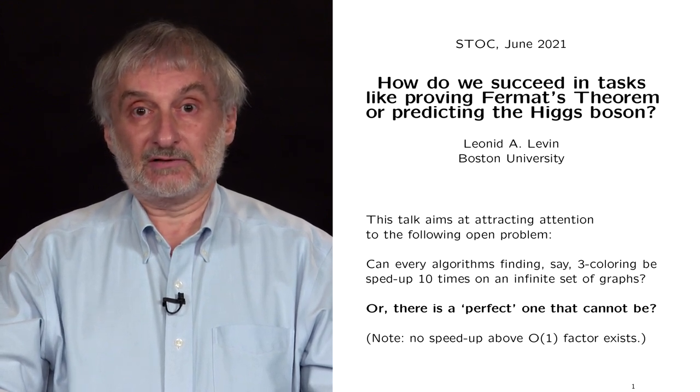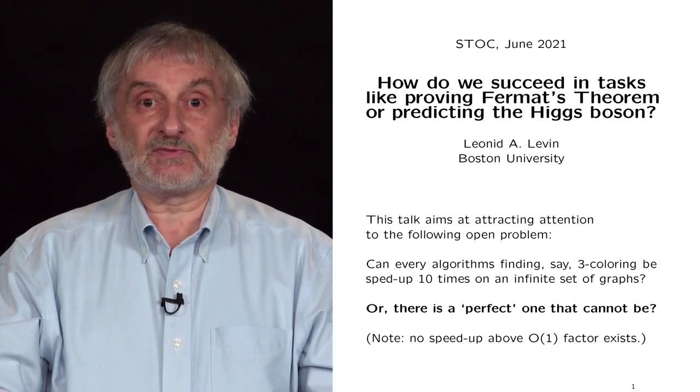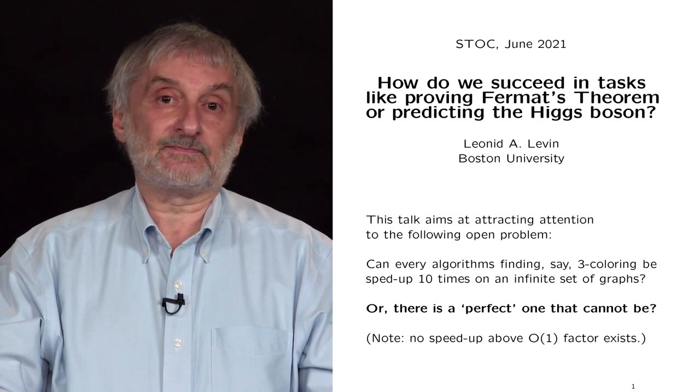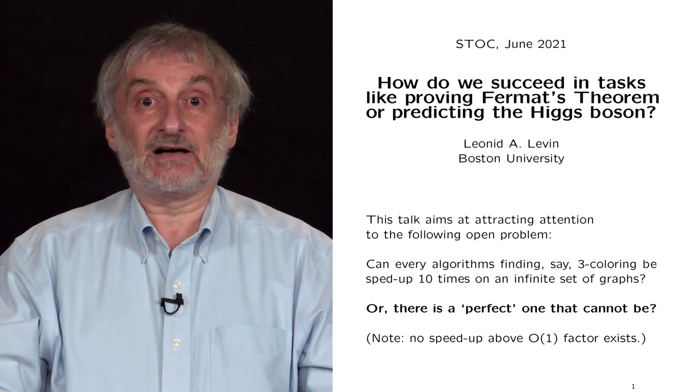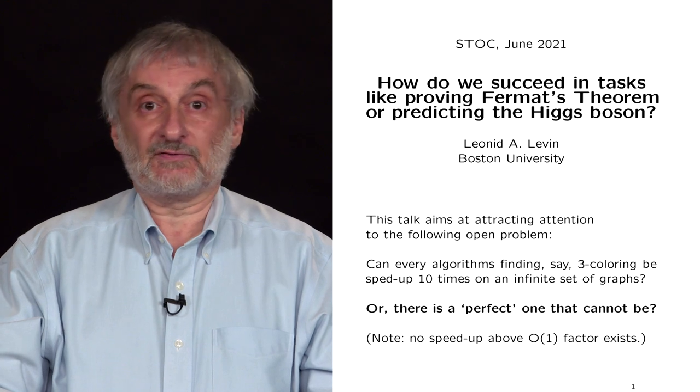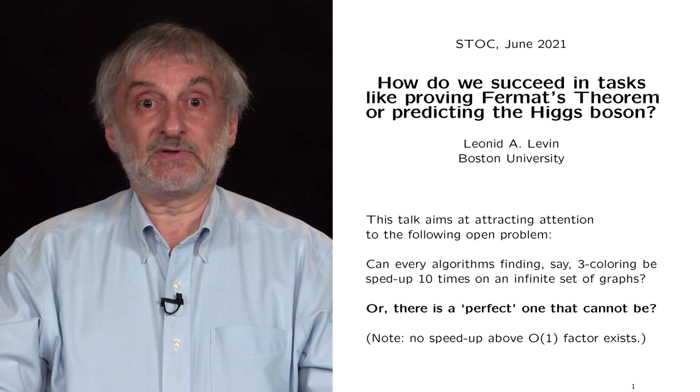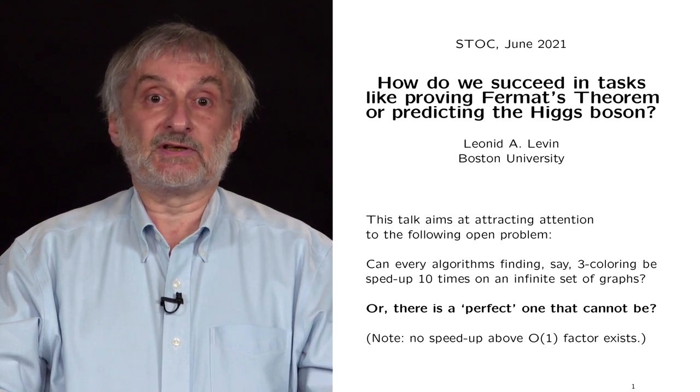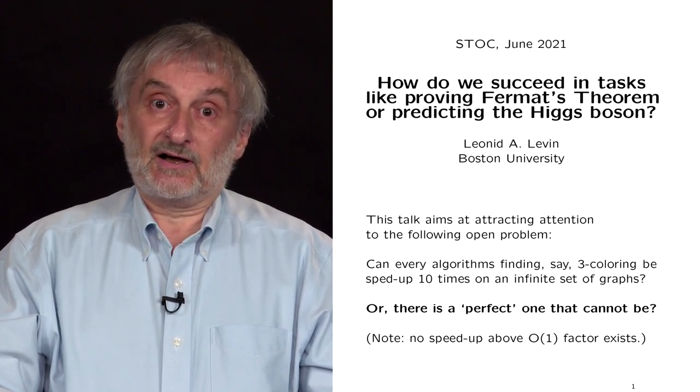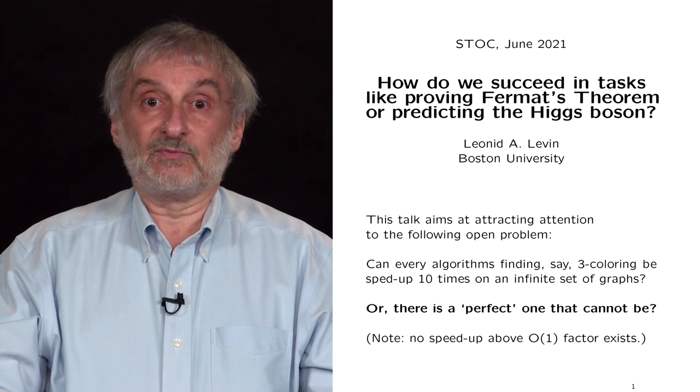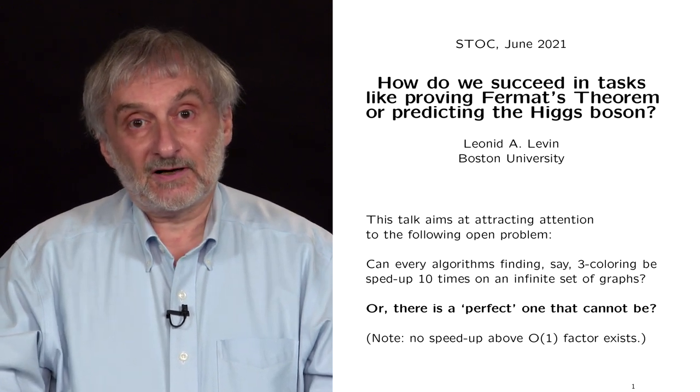Let me now get more technical and focus on a specific problem. Consider for instance algorithms that three-color given graphs. Is it true that every such algorithm can be sped up ten times on some infinite set of graphs? Or there is a perfect algorithm that cannot be sped up ten times even on a subset of graphs? Note that there is a three-coloring algorithm that cannot be sped up by more than a constant factor on any subset. The question is, must this factor get really big?